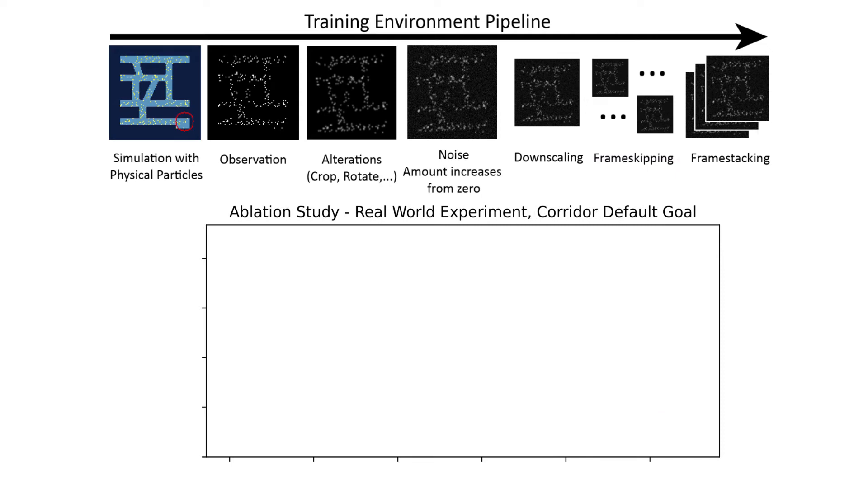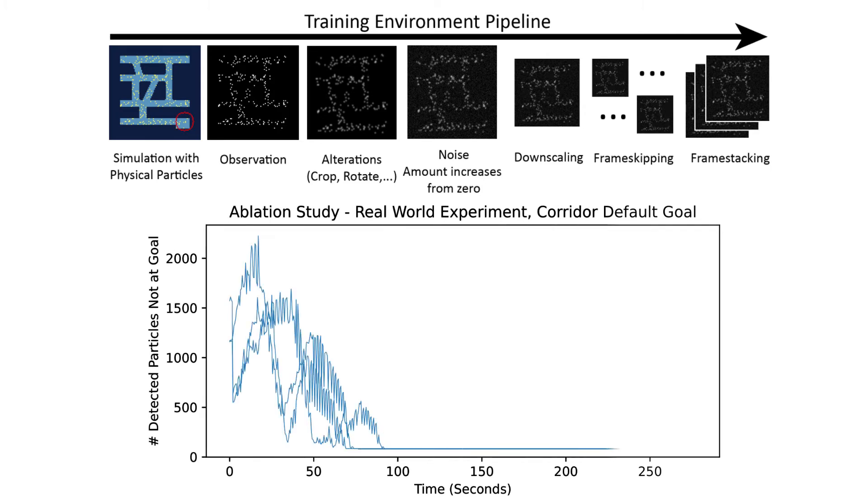We perform a similar ablation study on our hardware system. Here, the y-axis is the number of particles not yet at the goal, which we plot as a function of time. The number of particles is estimated by counting pixels. We run our baseline three times. The dark line is the mean.